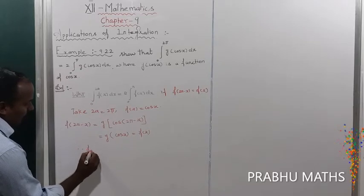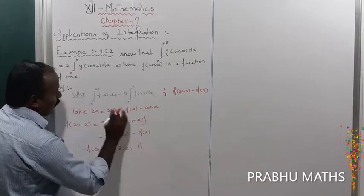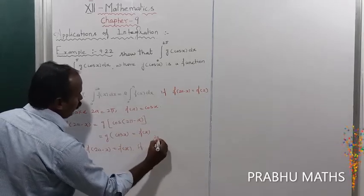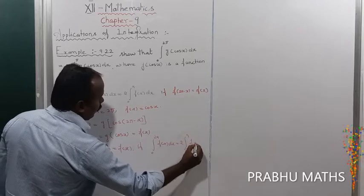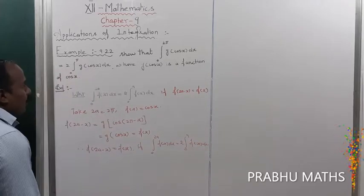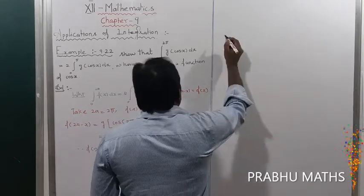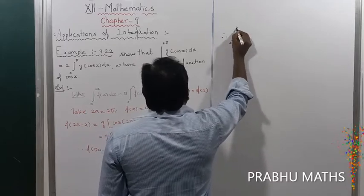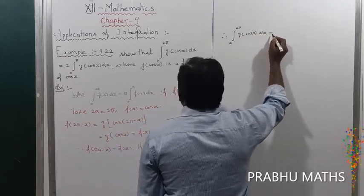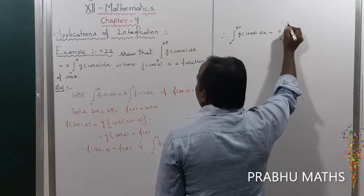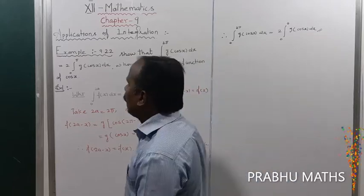Therefore f(2a - x) = f(x), and the condition is satisfied. So the formula applies, and therefore integral from 0 to 2π of g(cos x) dx is equal to 2 times integral from 0 to π of g(cos x) dx. This gives us the solution to Example 9.22.